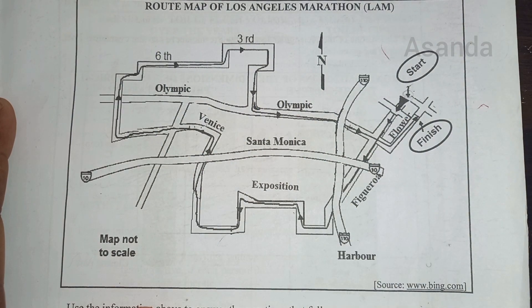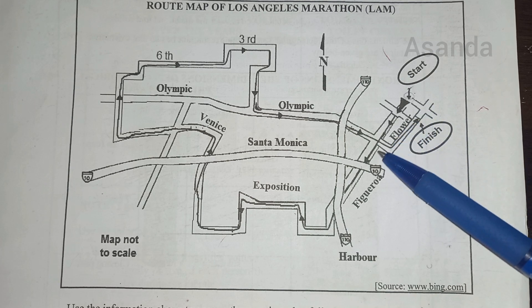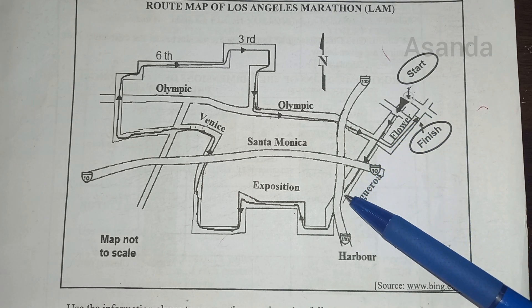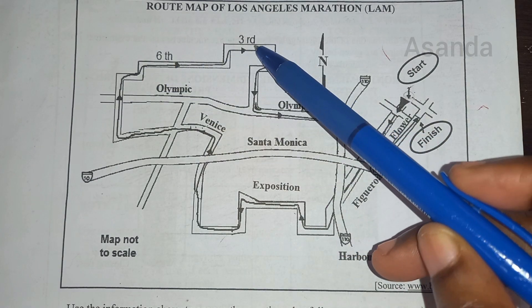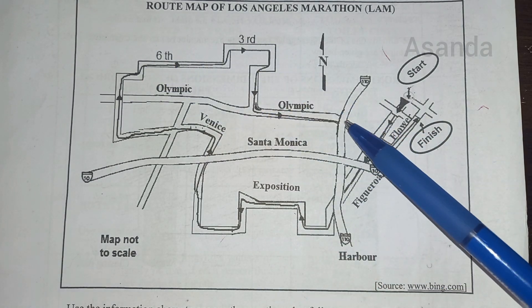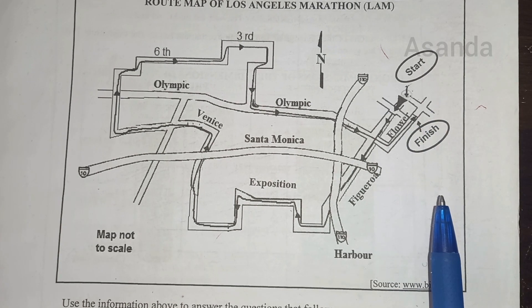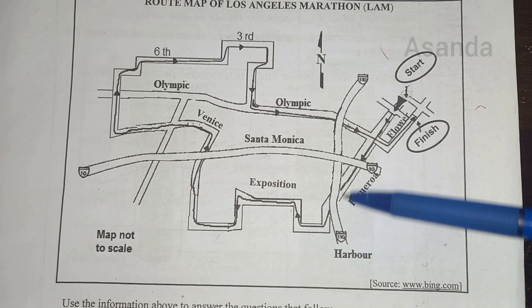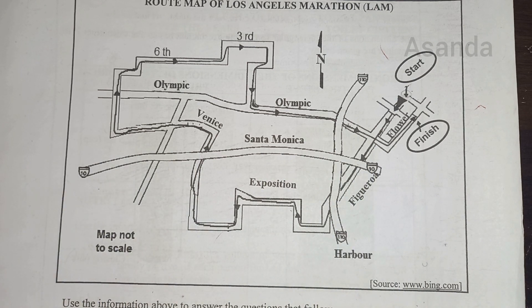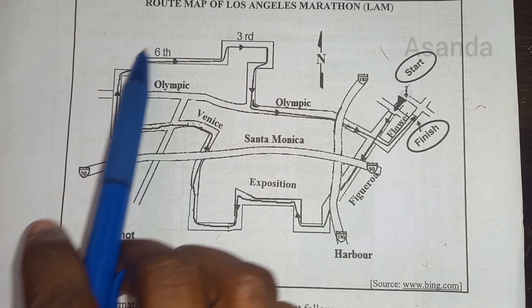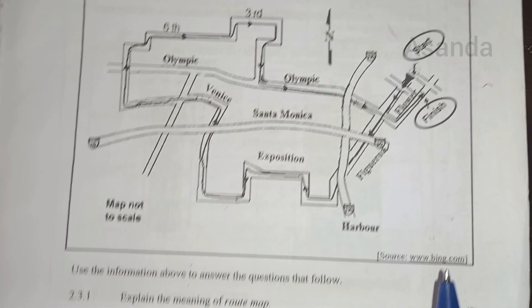We have the starting point, and then the line breaks again and again, going all the way. Then the finish line. That is Harbor 110 and Figueroa — those are the names of the roads. This one is Venus, and that is Flower Street over there.